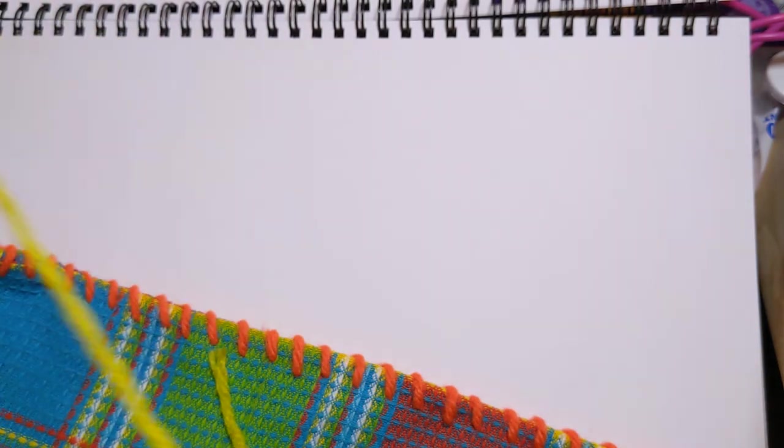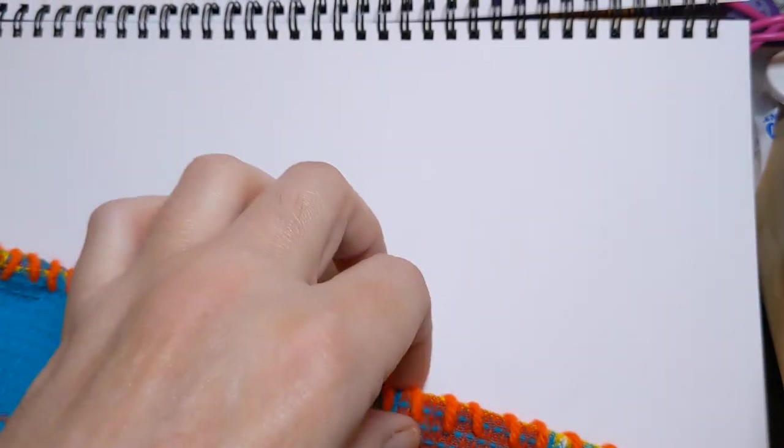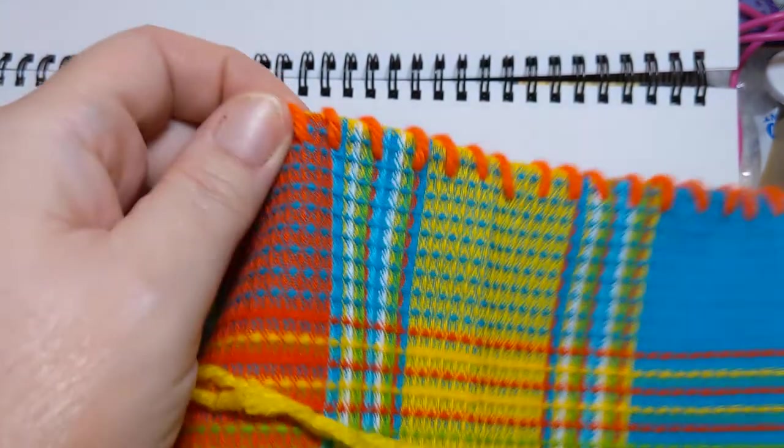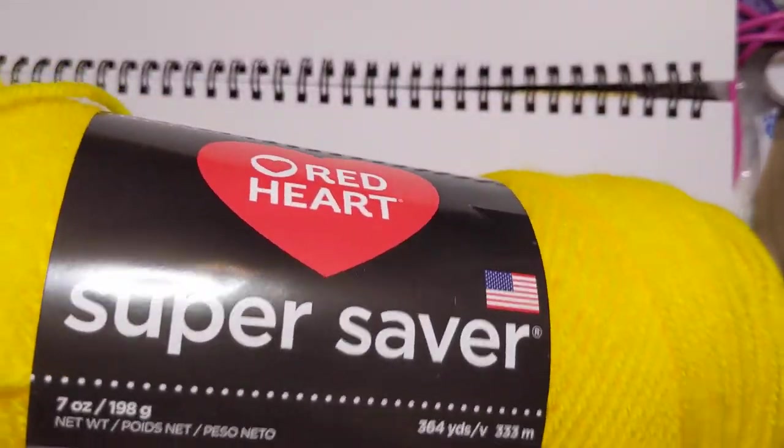In this one, we are going to actually attach crochet to the top of the towel that we went ahead and did our little sewing at the top on. Now, the yarn that I'm using, in case you're wondering,